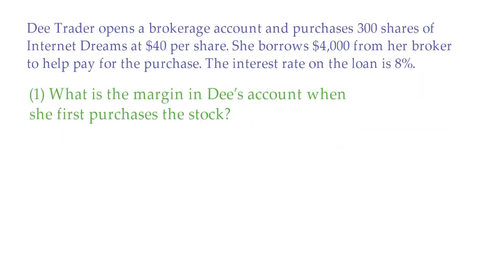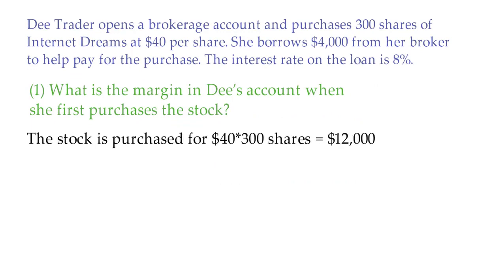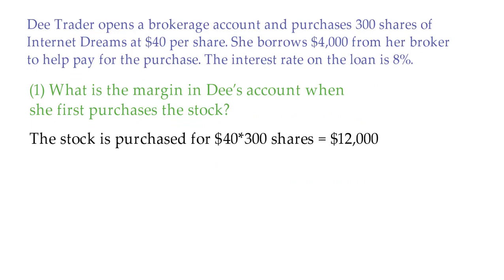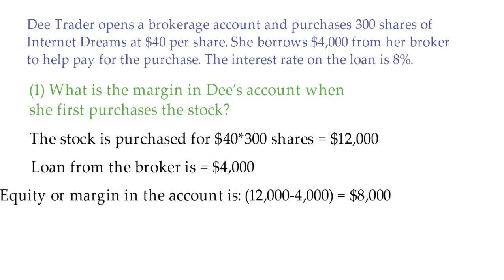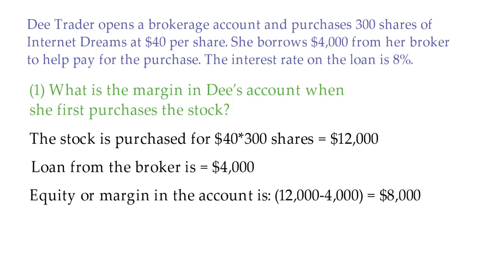The stock is purchased for $40 each, which is 40 times 300 equals $12,000. The loan from the broker is $4,000, and the equity, or the margin in the account, is $8,000.